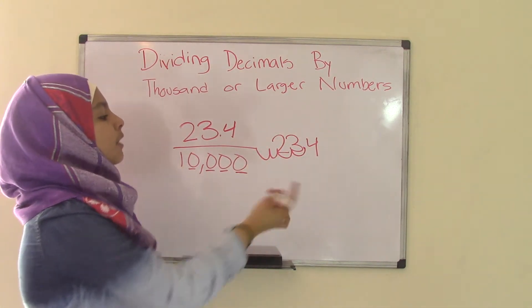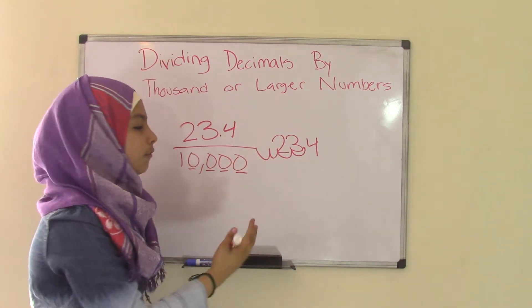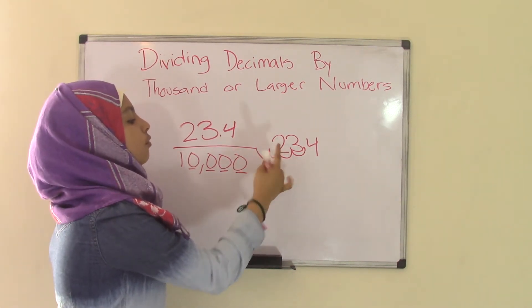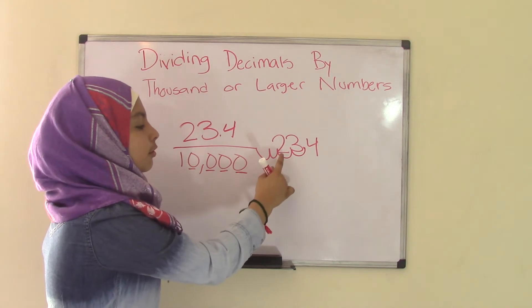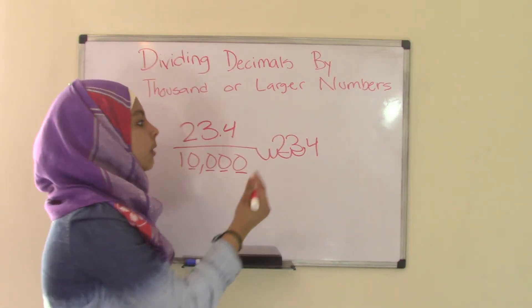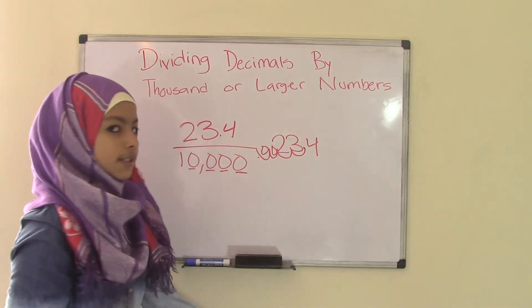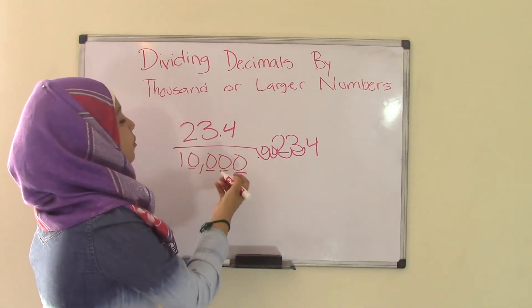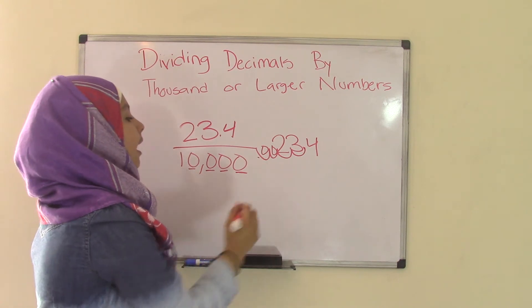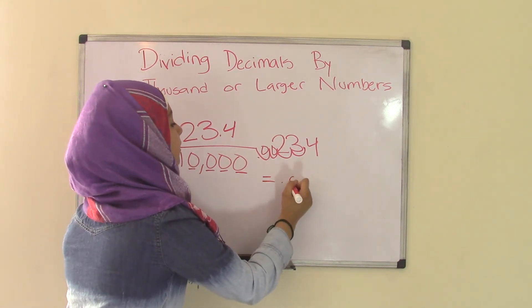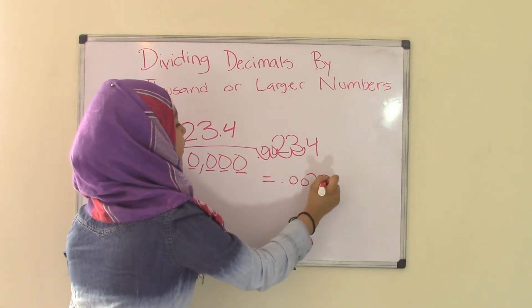As you can see, if it was only 3.4, then we would have to replace the 2 with a zero. But we already have 2 in there, so we don't have to really replace that with a zero. All we do is just fill in the gaps with zeros. So it was pretty much the same thing. That means the quotient of 23.4 divided by 10,000 equals 0.00234.